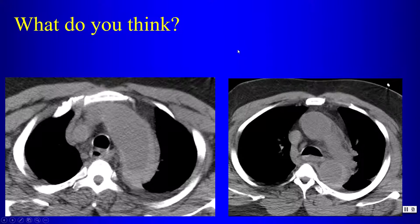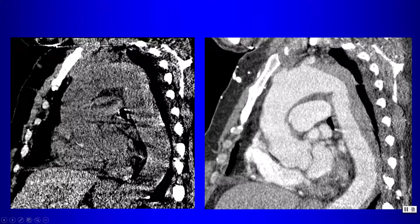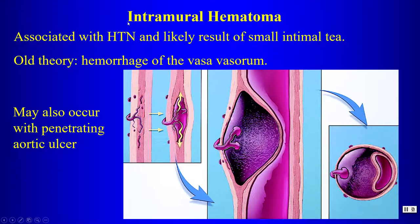On non-contrast CT, a crescent of high attenuation within the wall of the aorta is intramural hematoma. This is why dissection protocols include a non-contrast CT before CT angiography — to look for intramural hematomas. On post-contrast CT, it can be hard to identify as hematoma, but on pre-contrast CT the hyperdense crescent sign is the sign of intramural hematoma. Narrowing the windows makes the difference in attenuation easier to see. Intramural hematoma is associated with hypertension and is thought to result from a small intimal tear not necessarily visible on CT.